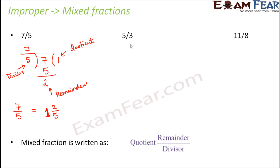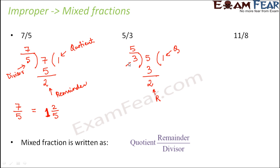Let us try it out with the next example — 5 by 3. The denominator becomes the divisor, and you put the numerator as the dividend. So 3 ones are 3, and 2 is the remainder. So 2 is the remainder, 1 is the quotient, and 3 is the divisor. Therefore 5 by 3 is equal to 1 and 2 by 3. That is how you convert 5 by 3 into a mixed fraction.